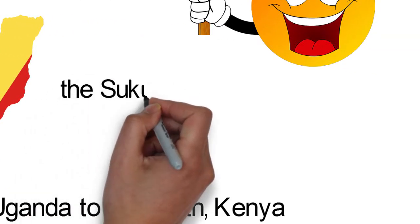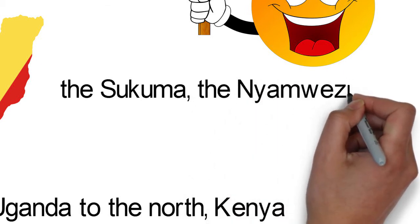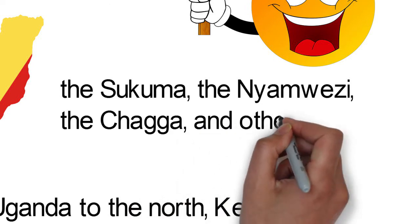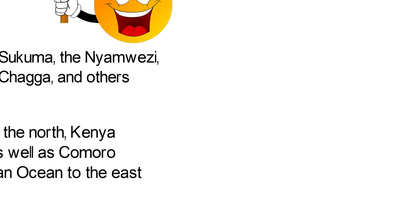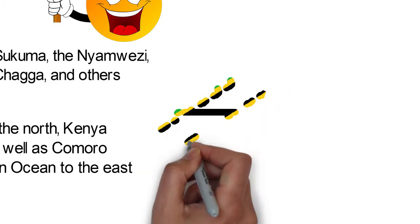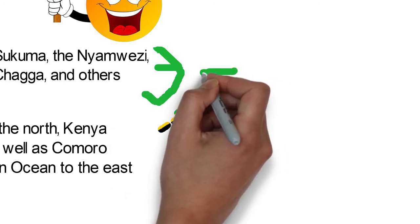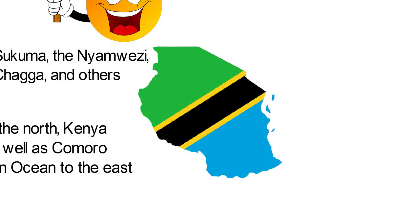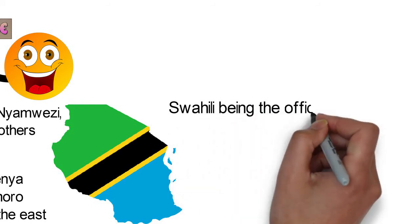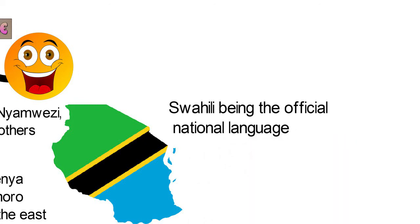There are over a hundred distinct ethnic groups and tribes in Tanzania, some of which are the Sukuma, the Nyamwezi, the Chaga, among others. There are many languages spoken in Tanzania; however, there is no language spoken natively by a majority of the population. The country maintains Swahili and English as its lingua francas, Swahili being the official national language.